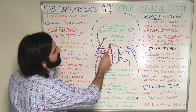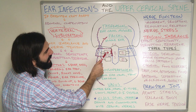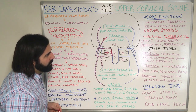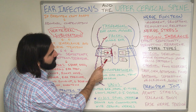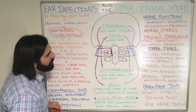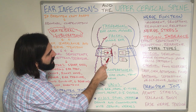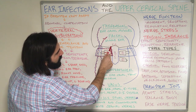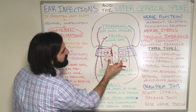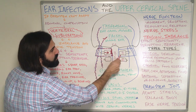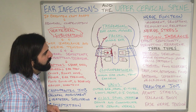We have the foramen magnum found on the occipital bone. Next down, we have the atlas bone, or the first cervical vertebra. Next down, we have the axis bone, or the second cervical vertebra. And in the middle here, we have the brainstem. The brainstem leaves the skull from the foramen magnum, and it's going to be housed and protected by these two top bones of our neck, the atlas and axis vertebral bones.